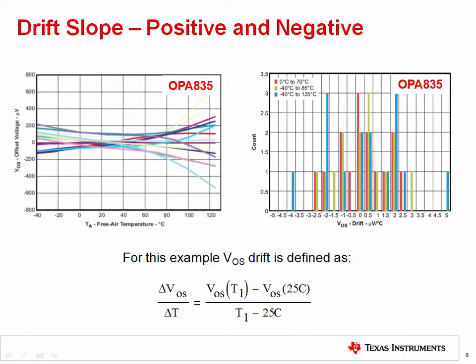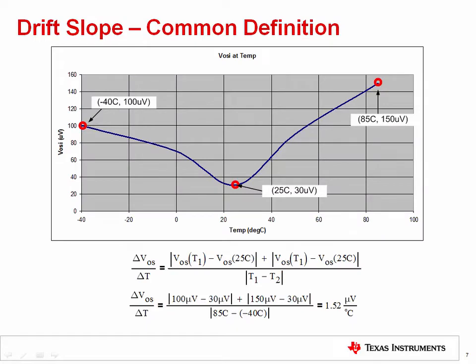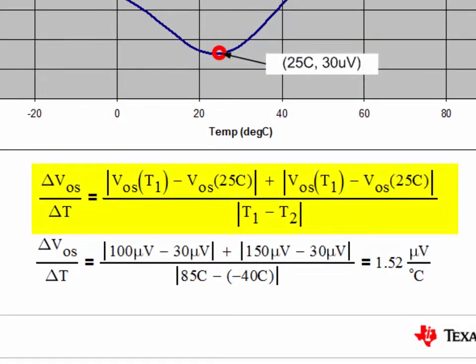The slope on offset voltage drift can be either positive or negative. One possible definition for offset drift will produce a positive or negative drift depending on the slope of the curve. Some other definitions use the absolute value, so you will not have a negative offset. A more common definition for drift is separated into two different regions, giving a more realistic view of the expected error than if you only considered the endpoints over the entire region. Note that the absolute value is used in the formula, so this formula will never give a negative result.